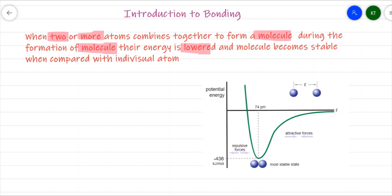At one point, we reach where the potential energy of the system becomes minimum. When the potential energy becomes minimum, stable bond formation takes place. The distance at which bond formation takes place is considered as the bond length — the distance between the two nuclei of the atoms — and the energy corresponding to that is minus 436 kilojoules per mole.